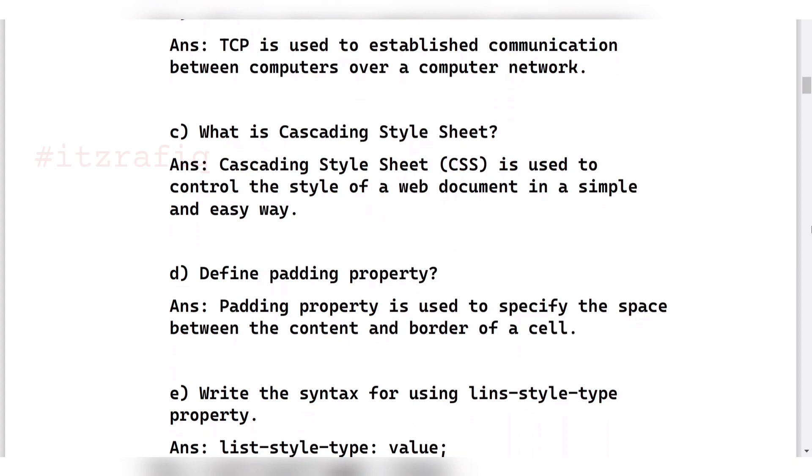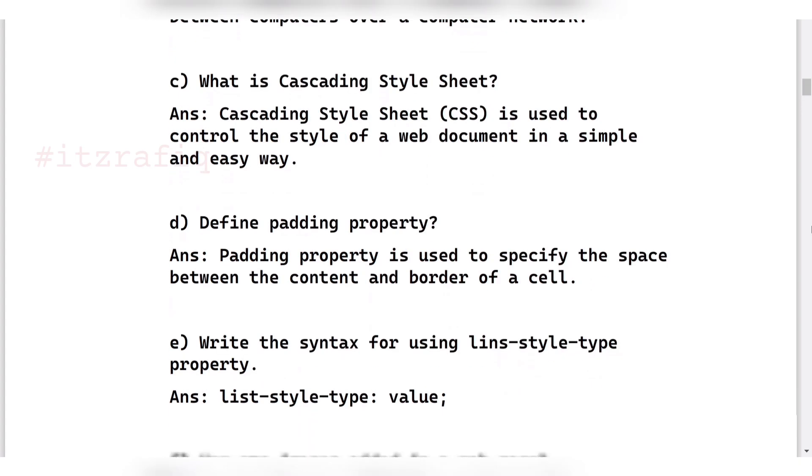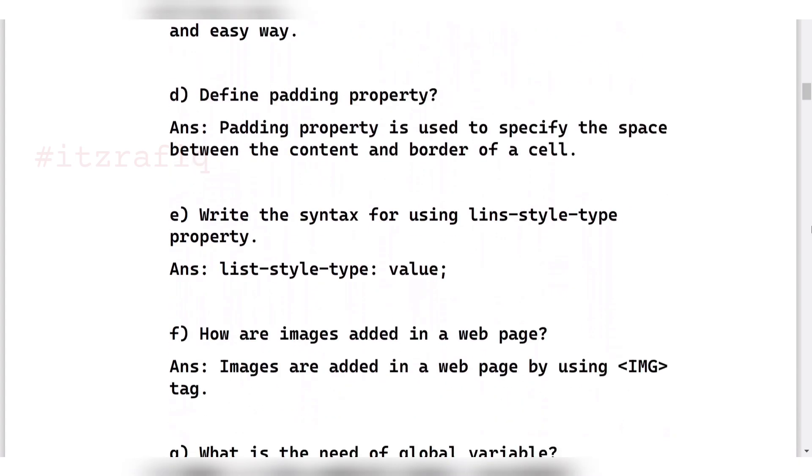After that, what is CSS? It is used to control the style of a web document or web page. Padding property is used to define the style of the content and border of a cell. Then write the syntax for list style type property. The answer will be list-style-type colon value. If it comes for two marks, you can also write the values like for ordered list the values are none, capital A, small a. How are images added in a web page? Images are added in a web page by using img tag.